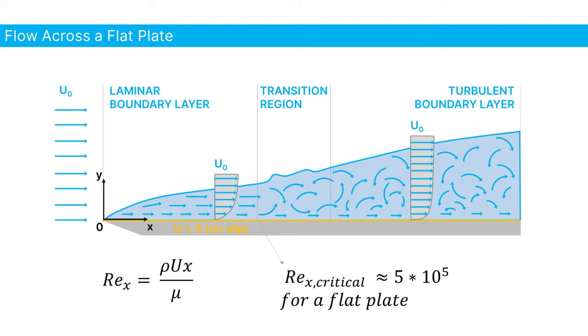Now a turbulent boundary layer features a completely different velocity profile, which can have a dramatic impact on the separation location and the friction and pressure forces on your object.